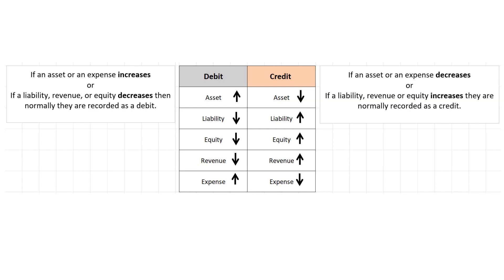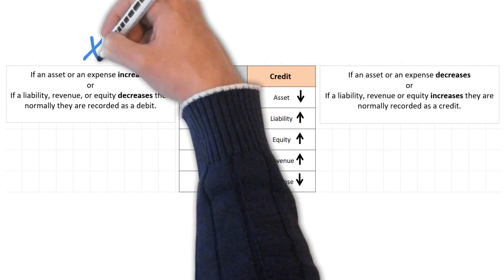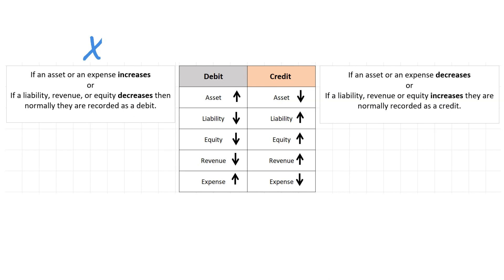In this chart you'll see there's a debit side, a credit side, and there are arrows and labels. On the left side, if an asset or an expense increases, or if a liability, revenue, or equity decreases, then normally they are recorded as a debit. All debit means is left, and credit means right.